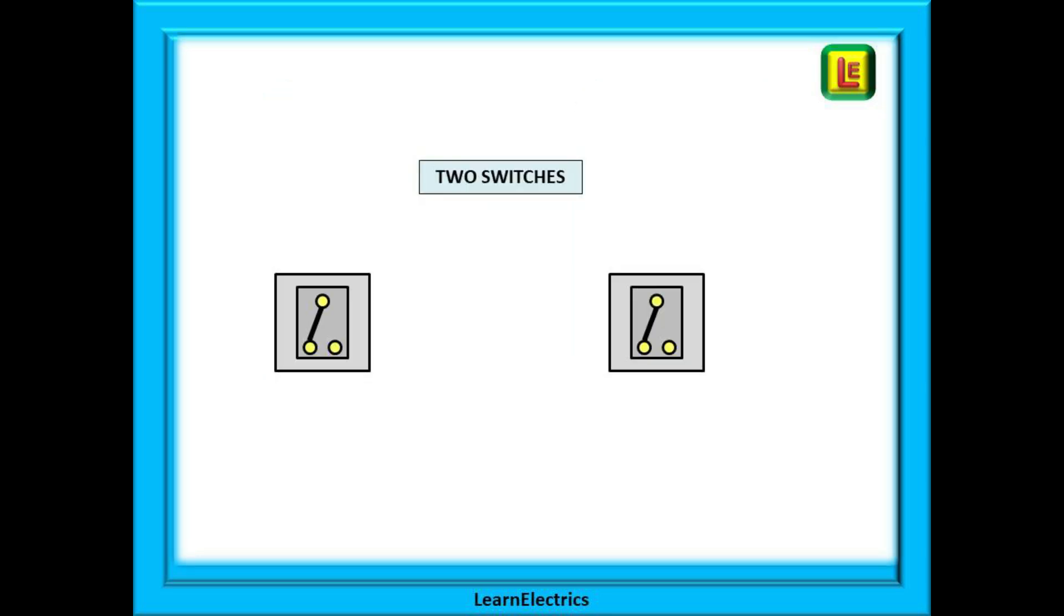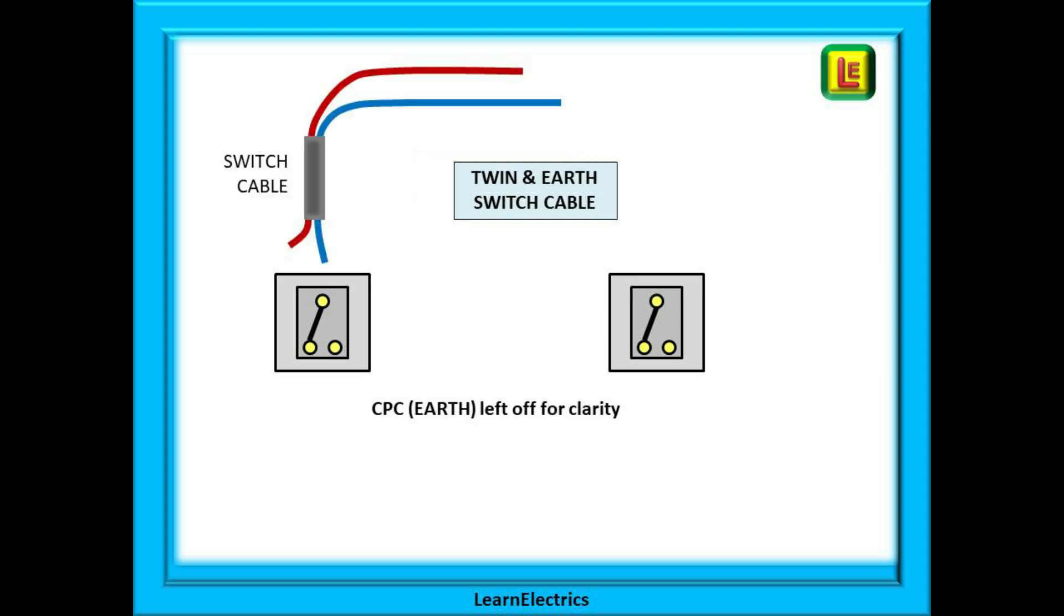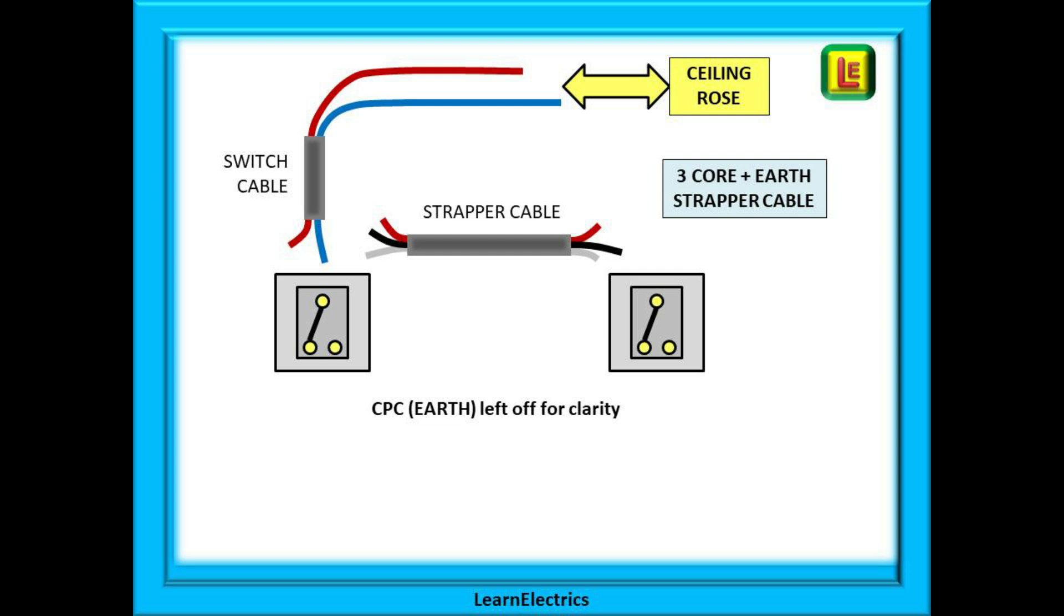We can begin with our two switches. One switch may already be in position and you may be adding a second to convert one-way to two-way, and the process is just the same. We have our twin and earth switch cable and this comes from the ceiling rose. Next we have the three core strapper cable that links the two switches. This link cannot be made with a standard twin and earth cable, and the CPC should not be used as a live wire.